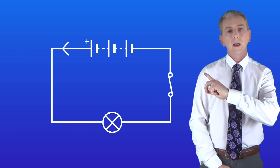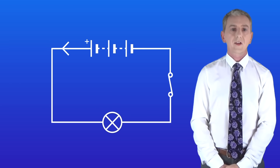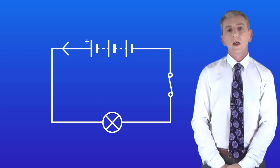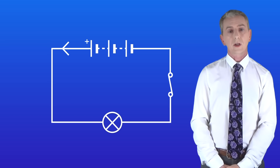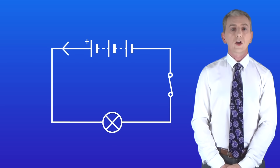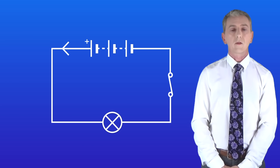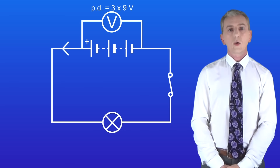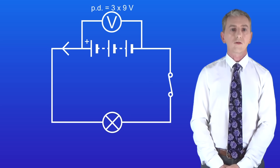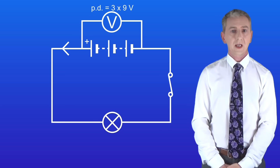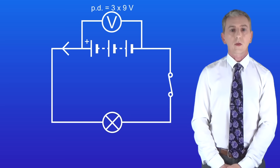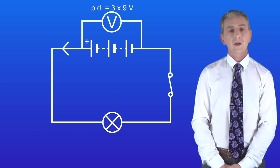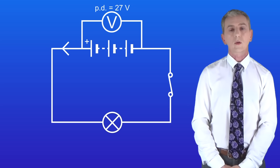Here's one for you to try. Each cell has a potential difference of nine volts — determine the overall potential difference of the battery. Pause the video and try this yourself. In this battery we've got three cells and each one has a potential difference of nine volts. Multiplying nine by three means we've got a total potential difference of 27 volts.